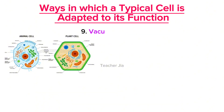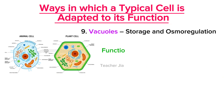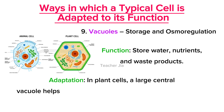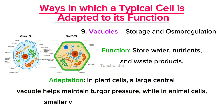Next is vacuoles, which are used in storage and osmoregulation. Their function is to store water, nutrients, and waste products. When talking about adaptations of vacuoles, in plants a large central vacuole helps manage turgor pressure, while in animal cells smaller vacuoles store nutrients and waste.